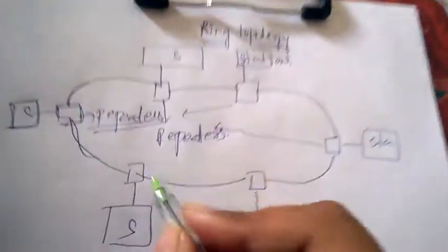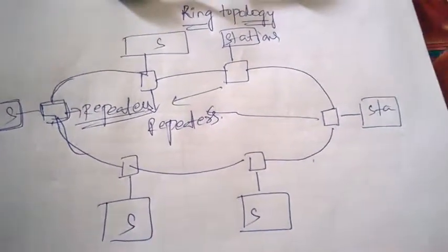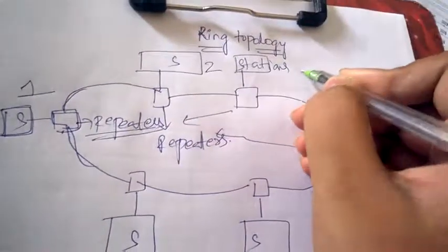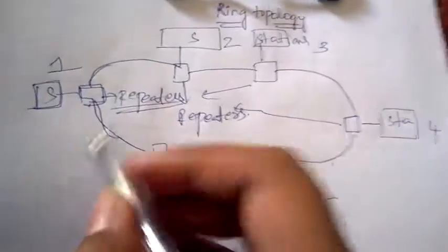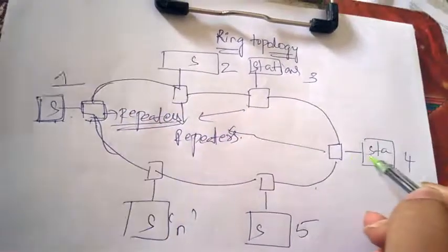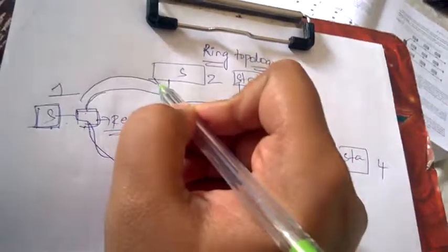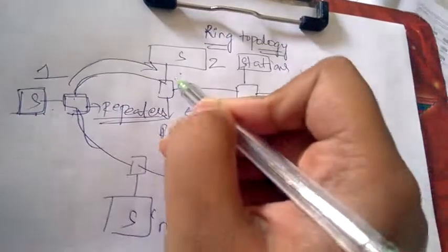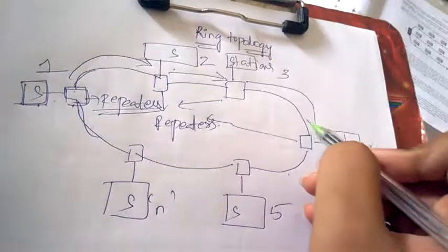Generally, when we want to transfer information from one station to another — for example, station 1, station 2, 3, 4, 5, up to station N — when we want to transfer information from station 1 to station 4, it can travel in this direction: from station 1 to station 2, then to station 3, and then to station 4.